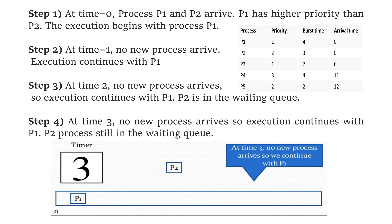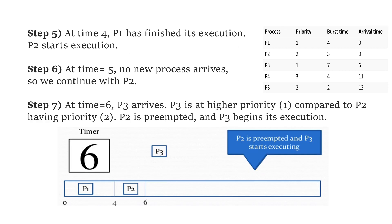At time 1, 2, and 3 units, no new process arrives, so P1 will be executing while P2 will be in the waiting queue, as shown in the diagram. Till time 3, only P1 is executing because its burst time is 4. At time 4, P1 has finished its execution.